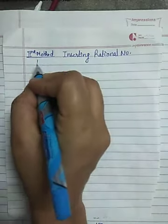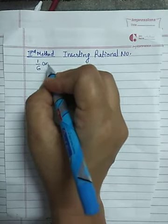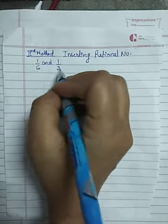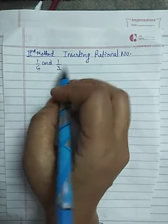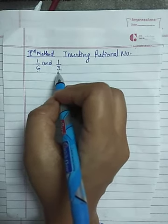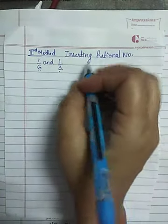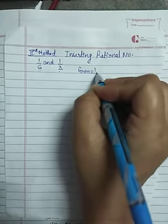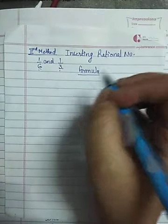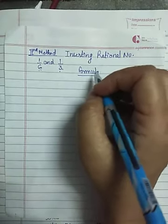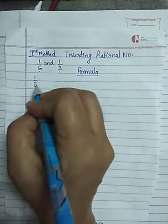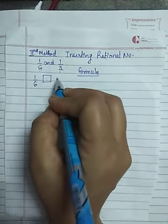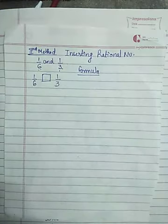Let's start. I'll take an example: 1/6 and 1/3 — these are the two rational numbers. This method is quite longer than the previous one, but sometimes it may be asked. We usually call it the average method. The formula is for finding the rational number just in between 1/6 and 1/3.